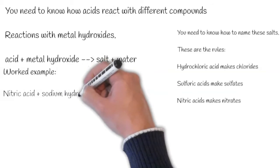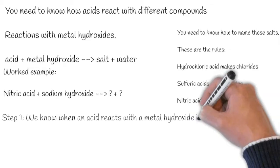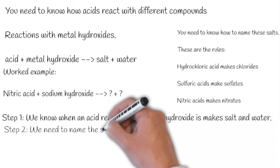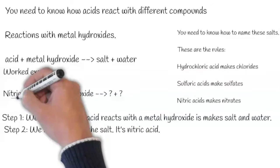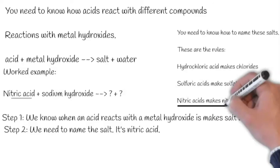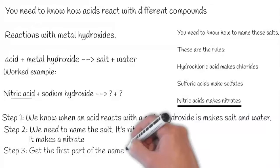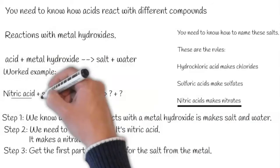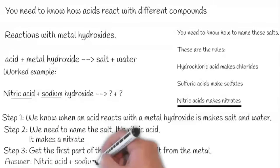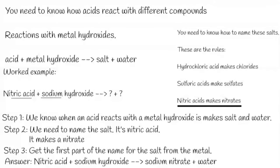Let's go through a worked example. Nitric acid plus sodium hydroxide makes what? We know when an acid reacts with a metal hydroxide, it makes salt and water. We need to name the salt. It's a nitric acid, and therefore it's going to make a nitrate. We need to get the first part of this nitrate from the metal — it's sodium hydroxide. So it's nitric acid plus sodium hydroxide makes sodium nitrate plus water.